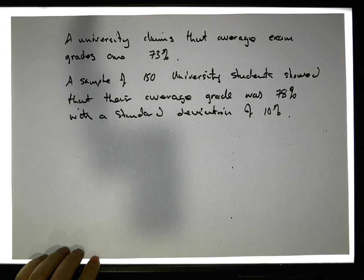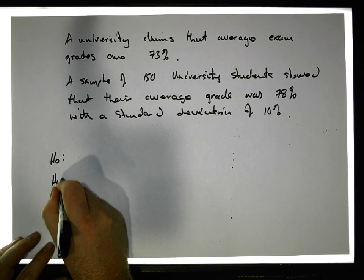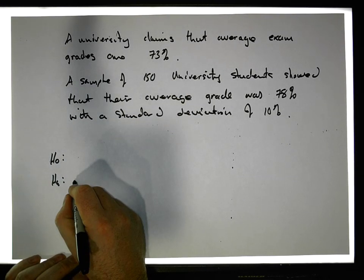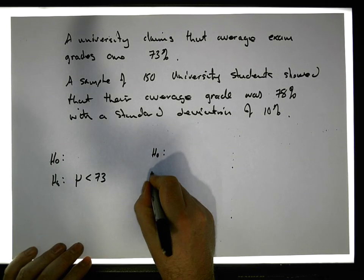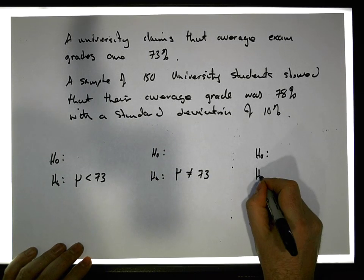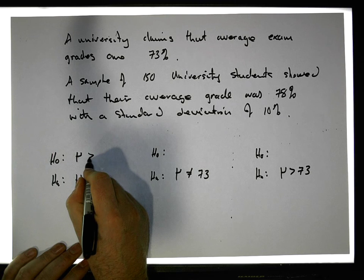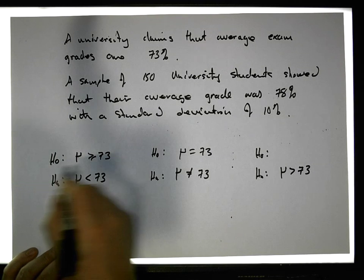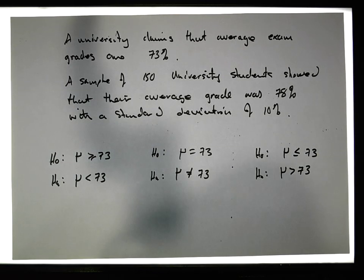What are we interested in trying to prove? It depends. We'll use this claim value as our demarcation point. It could be that the average is actually less than 73%, or that the average is different from 73%, or that the average is greater than 73%. In all three cases, the null hypothesis assumes the average is equal to 73%.